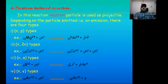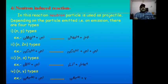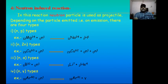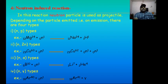The third artificial nuclear reaction based on projectile is neutron-induced reaction, where neutron acts as projectile. Neutron-induced reactions are subclassified into four types depending on the emission: first, neutron-proton type where proton acts as ejectile; second, neutron-neutron type where neutron itself acts as ejectile; third, neutron-alpha particle type where alpha particle acts as ejectile; and fourth, neutron-gamma type where gamma ray acts as ejectile.